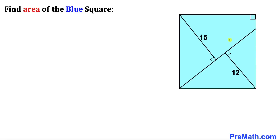In this video we have got this blue shaded square such that the diagonal side lengths are given as 15 and 12 units, as you can see in this diagram. Now we are going to calculate the area of this blue shaded square.